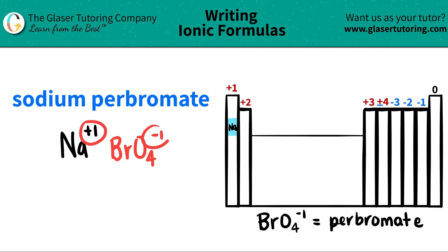Now, since you have both charges, all we're going to do is crisscross these charges to find how many of each I need. This +1 crisscrosses down telling me that I basically need 1 perbromate. And this -1 crisscrosses down telling me that I need 1 sodium. Now we're ready to write the formula.